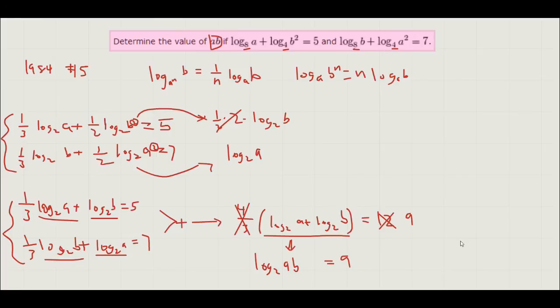And now finally, turning this into exponent form, we get a times b equals 2 to the power of 9. And this equals 512. And we're done with it all. Thank you.